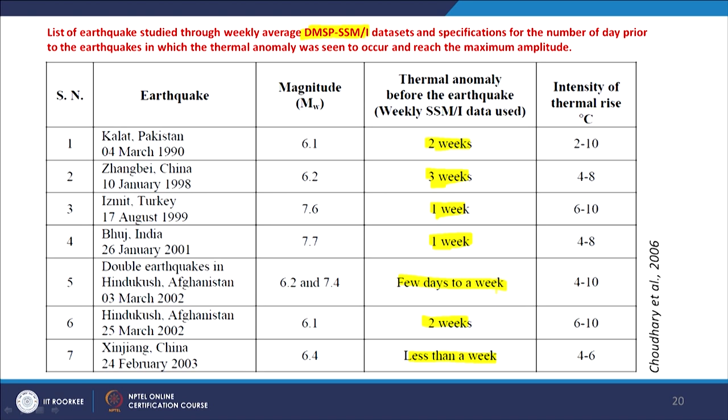The intensity of rise in temperature was 2 to 10 degrees, 6 to 10 degrees, and 4 to 8 degrees — which is very significant. Seven examples are presented where passive microwave remote sensing data has been employed for earthquake precursor studies. This brings to the end of the discussion about passive microwave remote sensing — the main advantages being that it covers a very large area and data is available on a daily basis, though at coarse resolution.